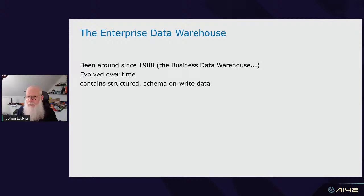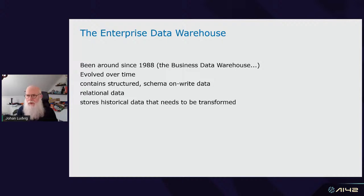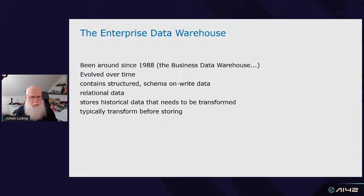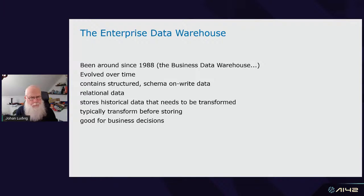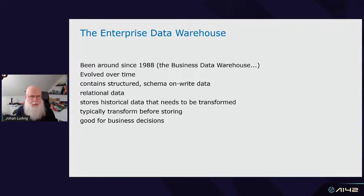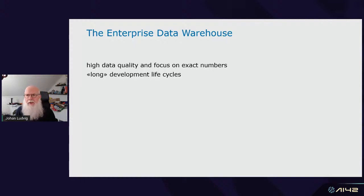I'd like to first dive into what data lakes and data warehouses are — the history of everything — and then look at the data lake house and how to build it. The data warehouse has been around since around 1988. It evolved over time and involves schema on write data. It's a relational database centric system, made to store historical data that needs to be transformed so it can support cross-business, cross-system querying for the entire business. Typically you do an ETL — extract, transform, and then load or store the data afterwards.